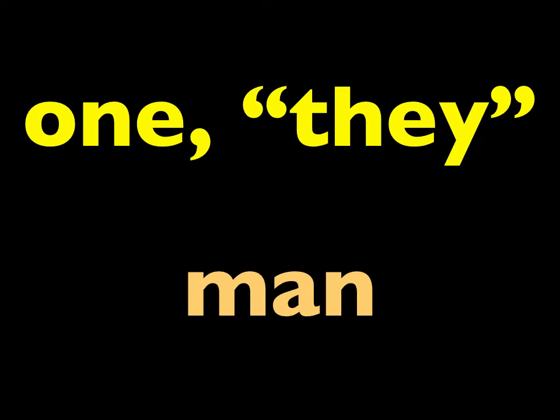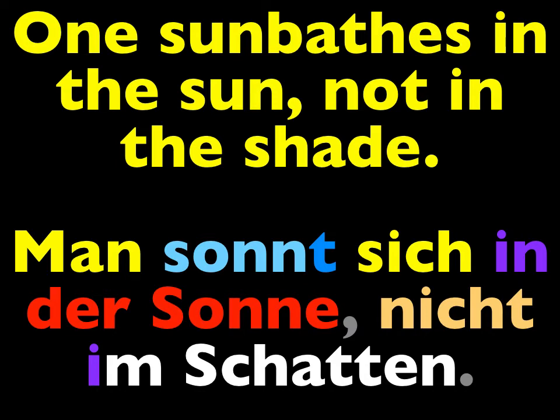The way to say one — not as a counting number, but in the sense of they — is the word man in German, lowercase m-a-n. For example, someone might say 'you know what they say.' We use the word they in English a lot, but German uses the word man in such a case. Repeat the following sentence: One sunbathes in the sun, not in the shade. Man sonnt sich in der Sonne, nicht im Schatten.